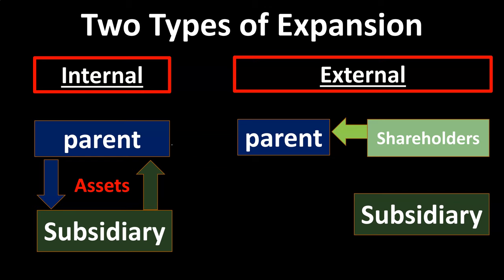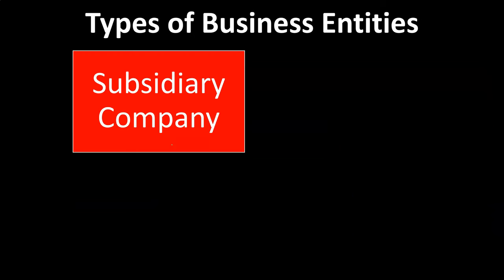In other words, the parent company sets up a subsidiary in some way, shape or form, and gives that subsidiary some assets and liabilities that were formerly the parent's. Then they maintain a parent-subsidiary type relationship with that subsidiary unit. From an accounting standpoint, we then have to think about how we're going to account for that with regards to financial accounting within that parent-subsidiary relationship.